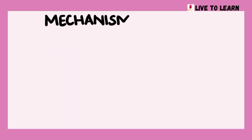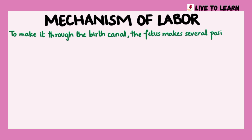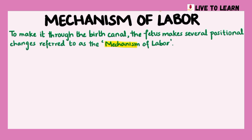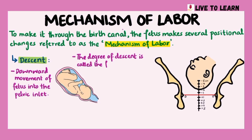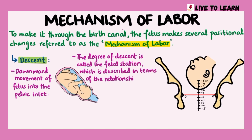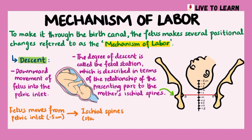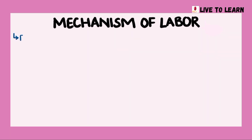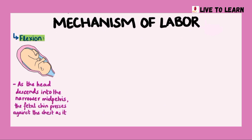While discussing the second stage of labor, let's also look at the mechanism of labor. To make it through the birth canal, the fetus makes several positional changes referred to as the mechanism of labor. The first positional change is called descent, which refers to the downward movement of the fetus into the pelvic inlet. The degree of descent is called the fetal station, described in terms of the relationship of the presenting part of the fetus to the mother's ischial spines. The fetus moves from the pelvic inlet at minus 5 station to the ischial spines at station 0, a position called engagement. The descent of the fetal head is followed by flexion, in which the fetal chin presses against the chest as it meets resistance from the pelvic floor.